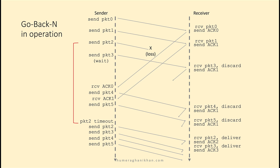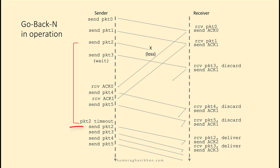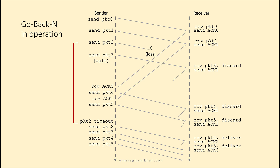On the sender side, a timeout event occurs. The sender is now ready to send packet 2, and after that it also resends packets 3, 4, and 5. Packet 2 is received at the receiver side, delivered to the upper layer, and its acknowledgement is sent. The same is done with packet 3, and so on.